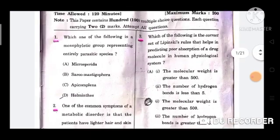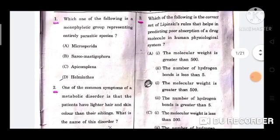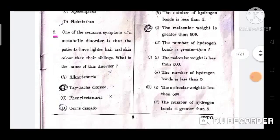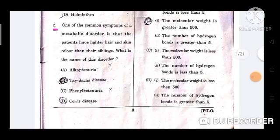Question number 3: Which of the following is the correct set of Lipinski's rules that helps in predicting poor absorption of a drug molecule in a human physiological system? The correct option is option B, the molecular weight is greater than 500, the number of hydrogen bonds is greater than 5.